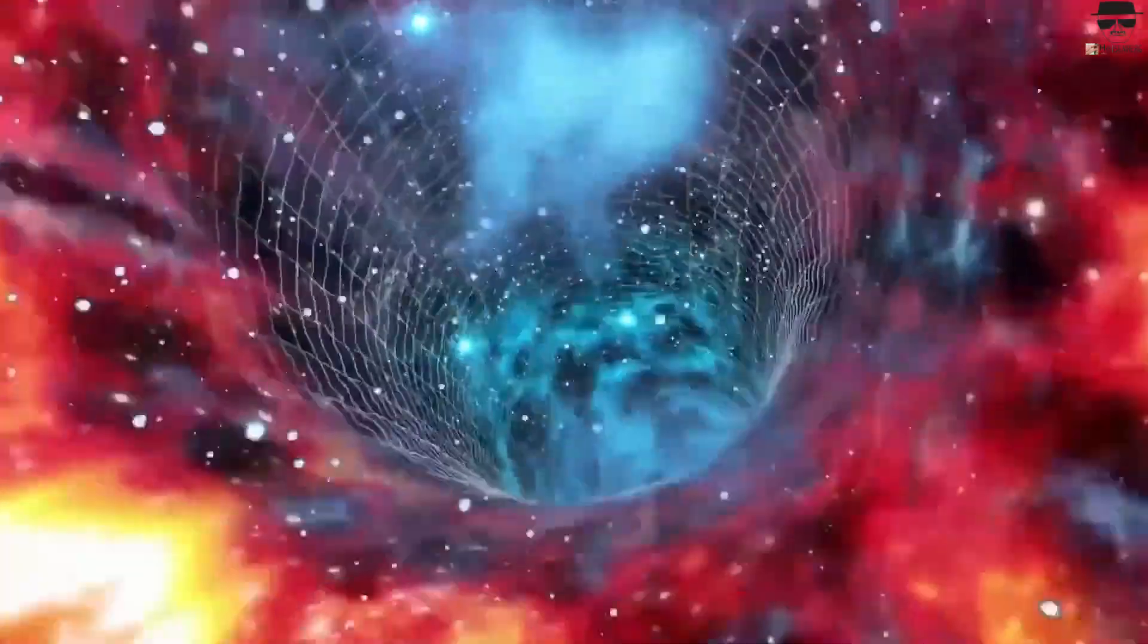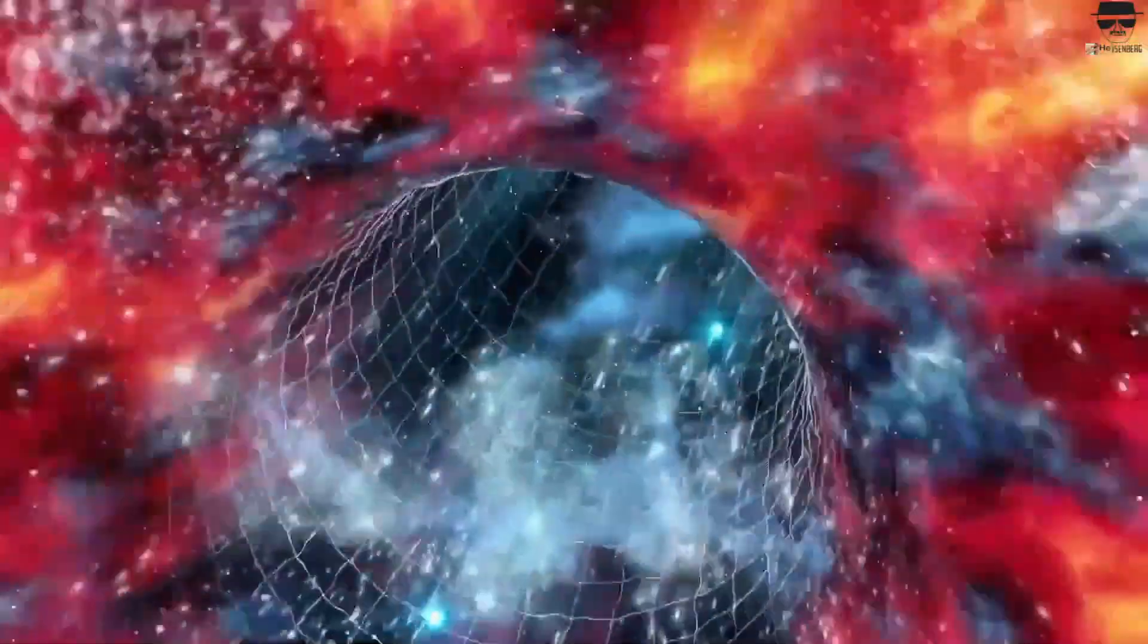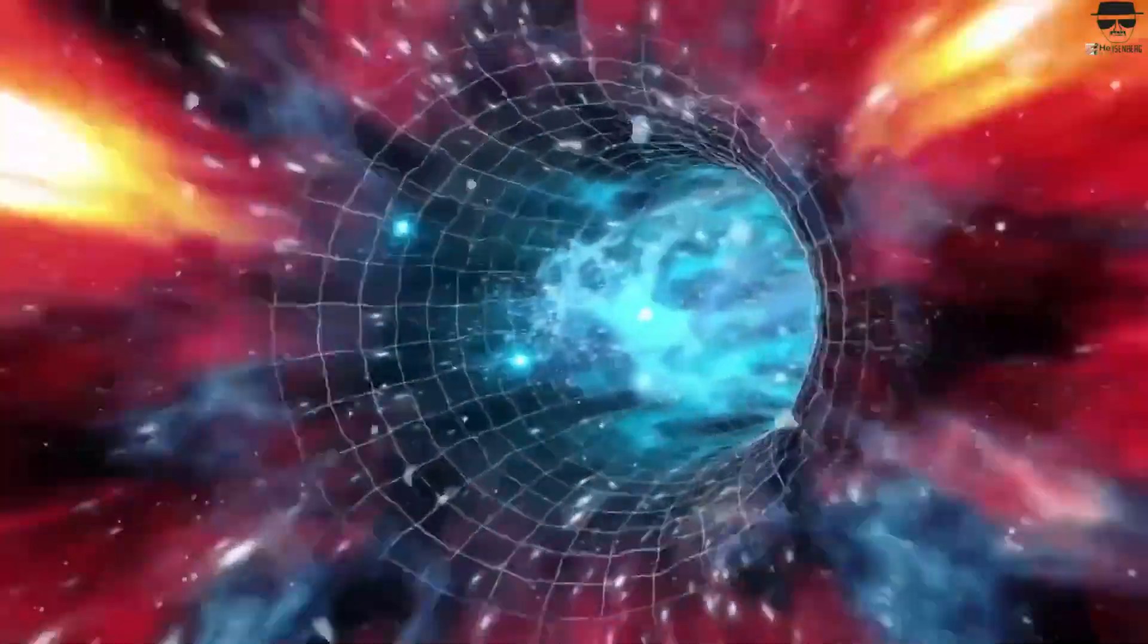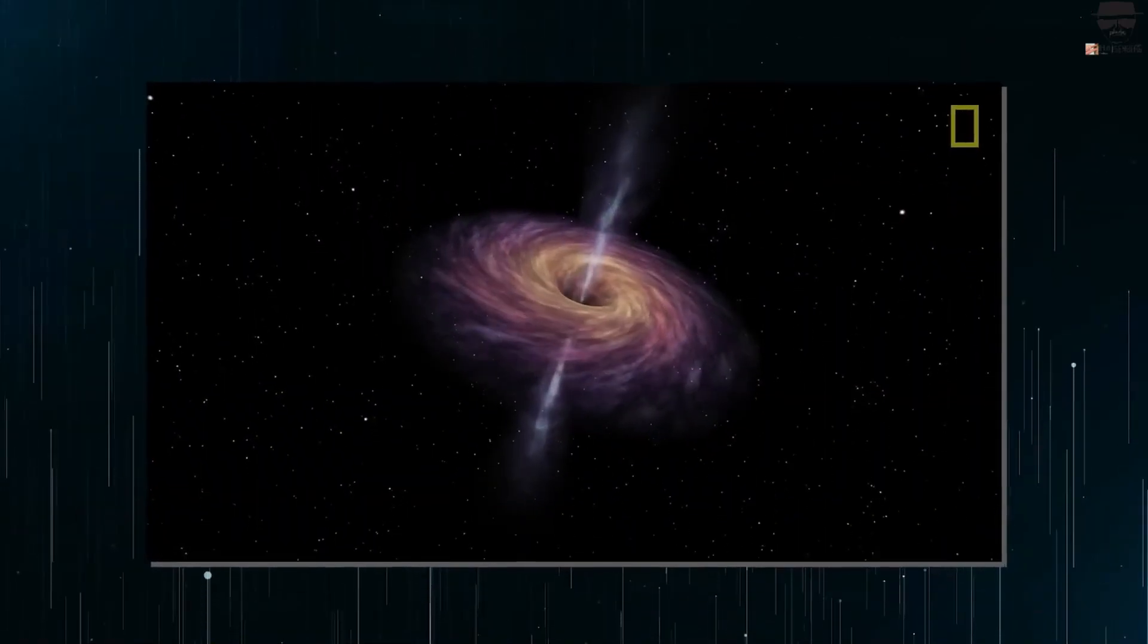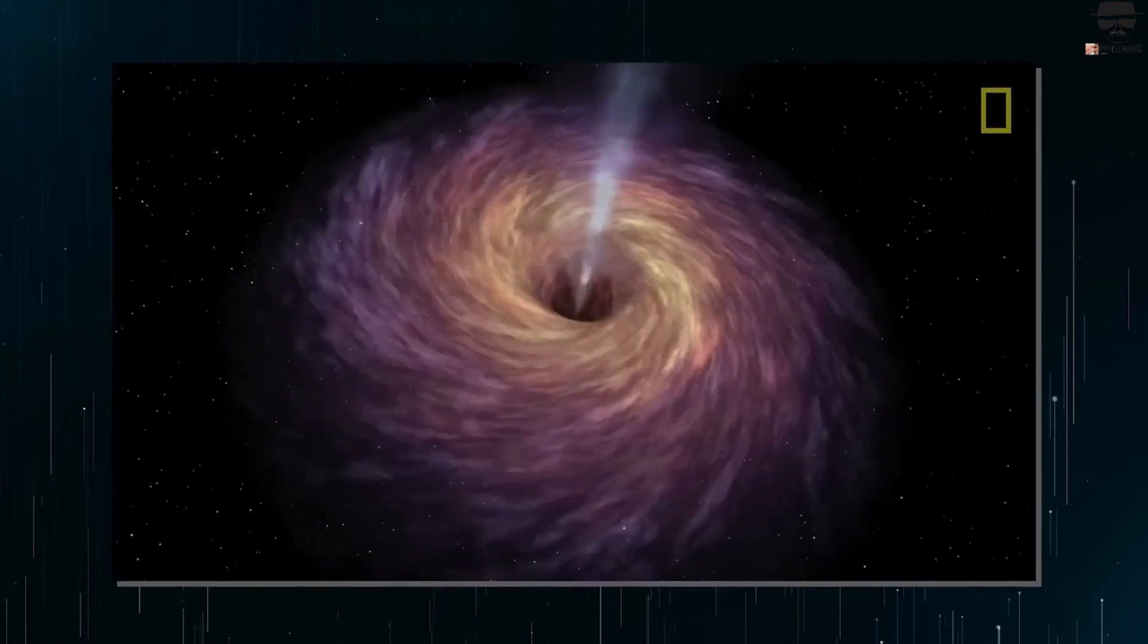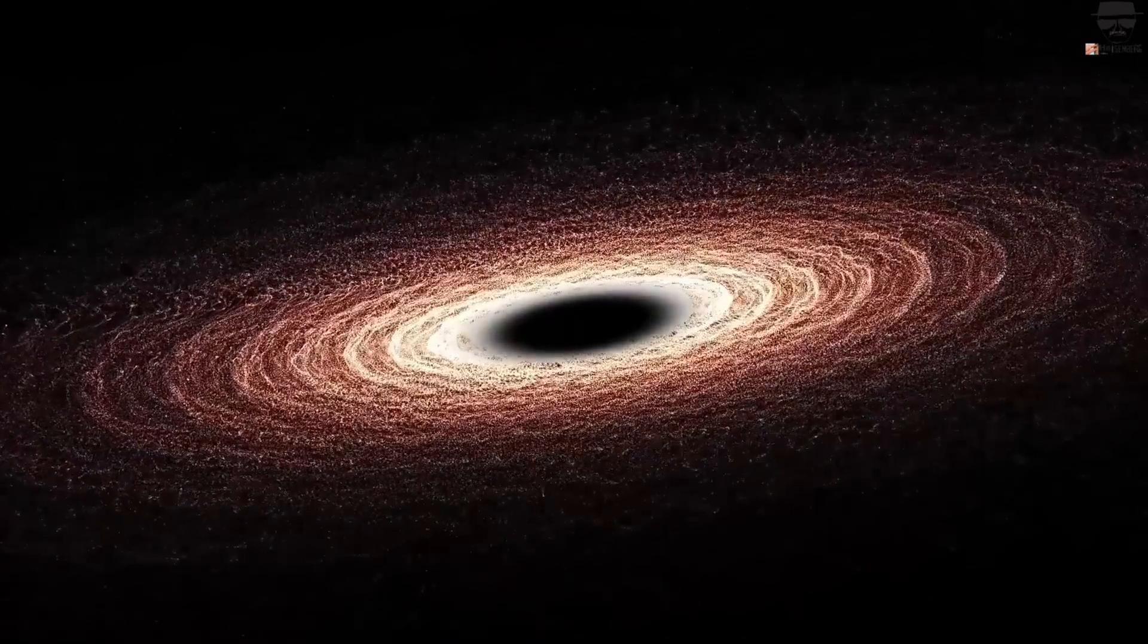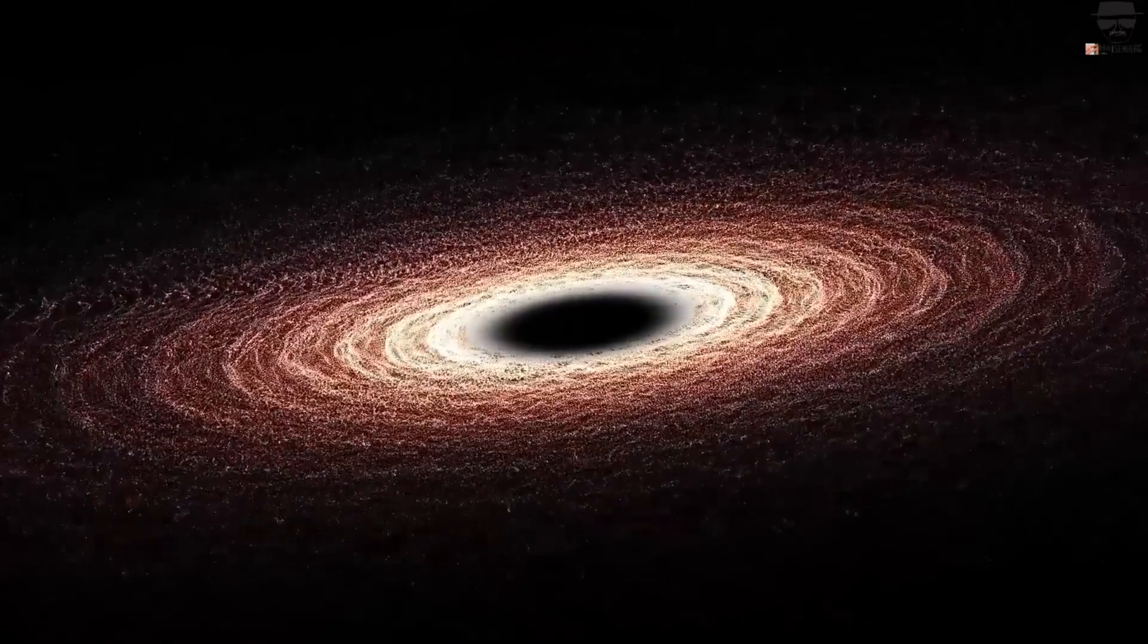One way to visualize this is to think about space as flowing like a waterfall or a moving walkway, and to think of particles as moving atop that background of flowing space. If space flows faster than your particles can move, you'll be drawn inwards towards the center, even as your particles attempt to flow outwards. That's why the event horizon, where particles are limited by the speed of light but space flows faster than particles can move, is of such profound importance.